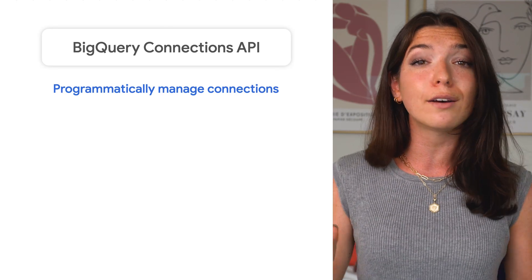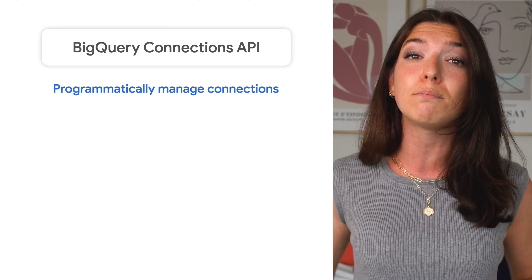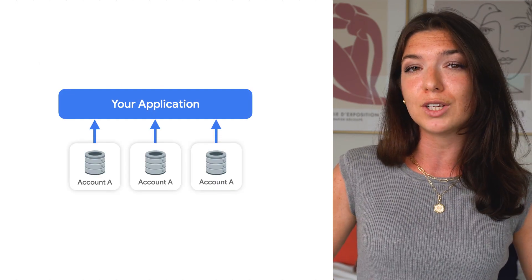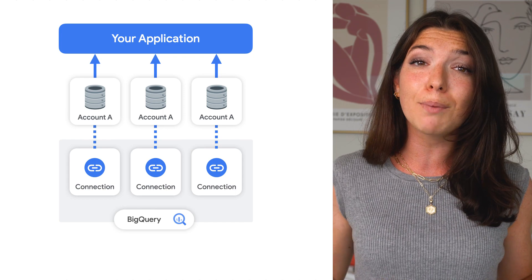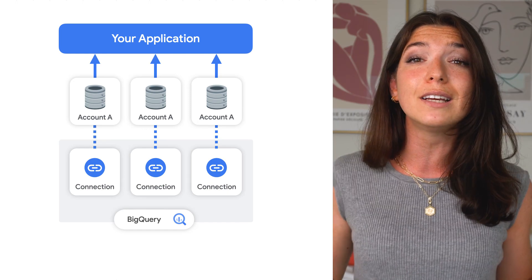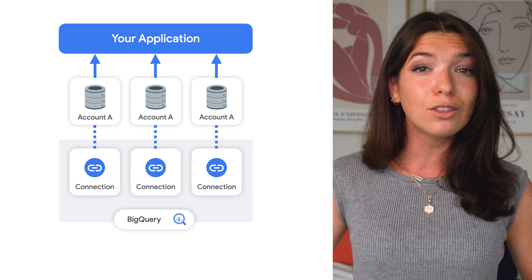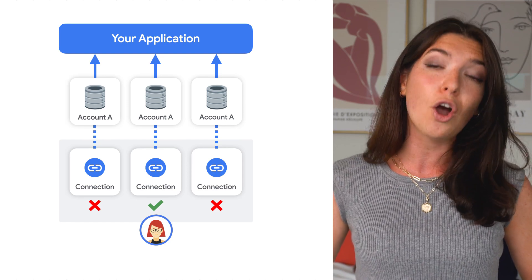On the topic of analyzing data from transactional databases, remember a few videos ago when we talked about connections, which allow you to write federated queries against Cloud SQL? There is an API for that too. The Connections API allows you to programmatically create and manage connections, which can be really useful if you have multiple databases supporting your application — like if you're a B2B organization with one database for each of your accounts. You may want to write a program that creates a new connection as part of the customer onboarding process, so your BigQuery users have access to the data without needing to send a request to you. You could even weave in the Google Cloud IAM API to ensure that only users who need access to the specified account's data are able to leverage the connection.